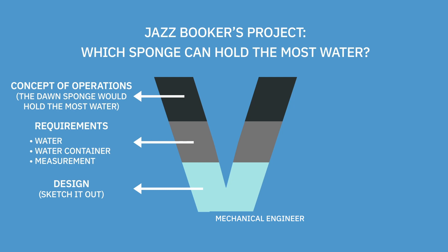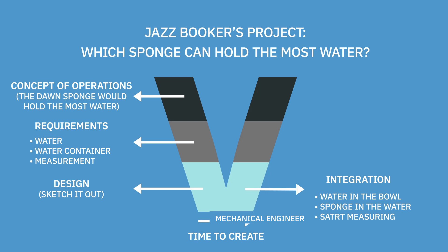Next up, design — sketch it out, draw it out. After design, make your drawing come to life. Gather the bowls, gather all of your materials. You're ready to go into integration — put those materials together, put the water in the bowl, put the sponge in the water, and start your measuring. Once you've done this, start your test. Test to see if your hypothesis is true. After you test, validate that your test results are good and that what you've recorded meets the requirements stated at the front of the V-model.